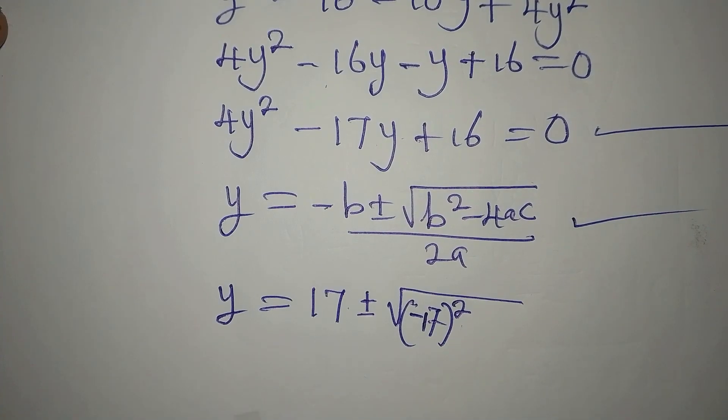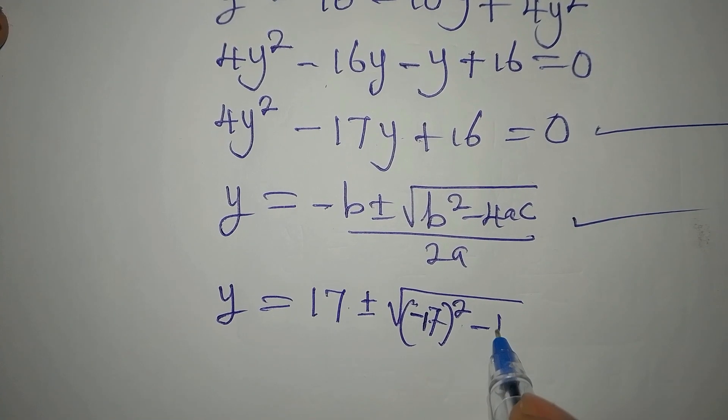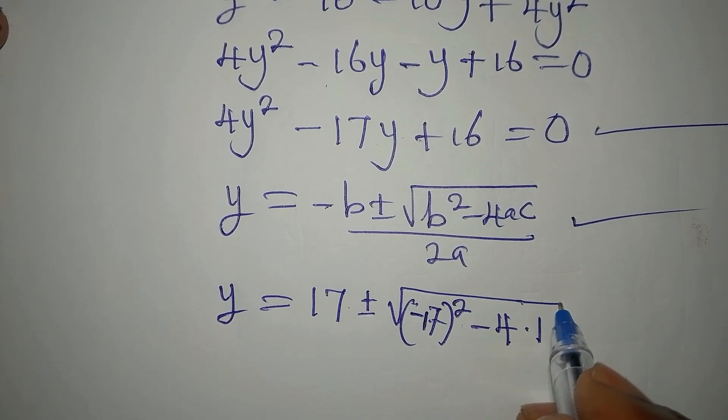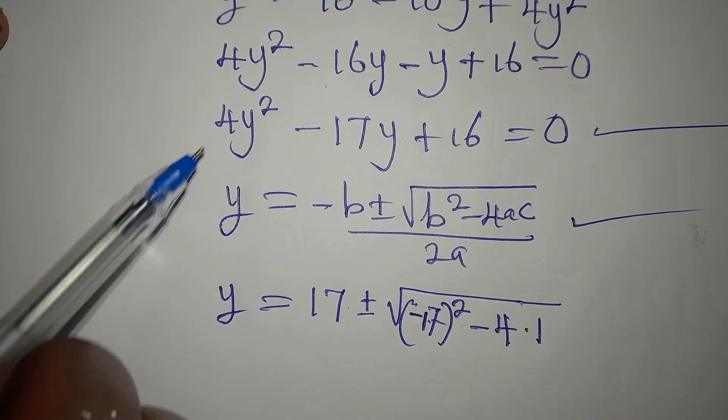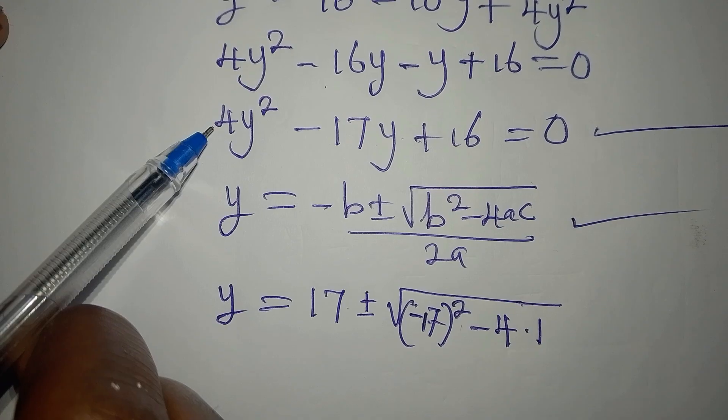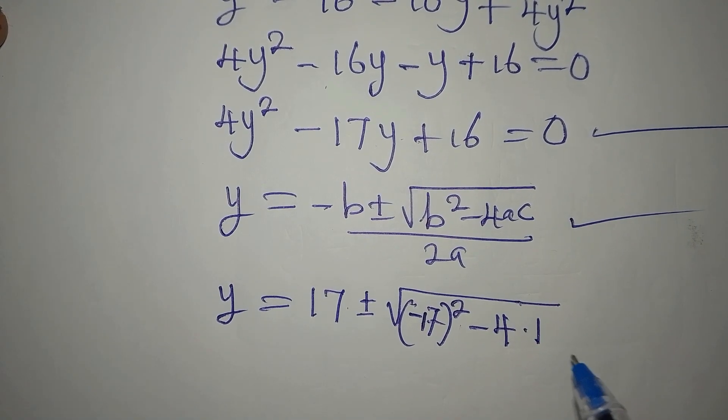This is my 17, then we have minus 4 times, by the way our a is 4, the coefficient of y squared, that is 4, so I'm going to write that 4 over here.